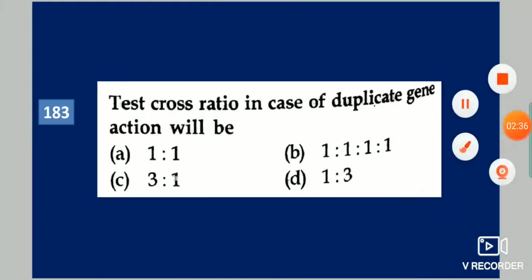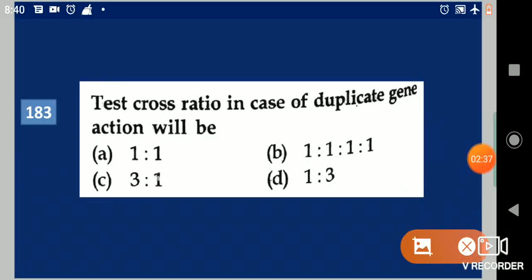Next question: Test cross ratio in case of duplicate gene action will be dash. Your options are: 1:1, 1:1:1:1, 3:1, or 1:3. Your answer is 3:1.